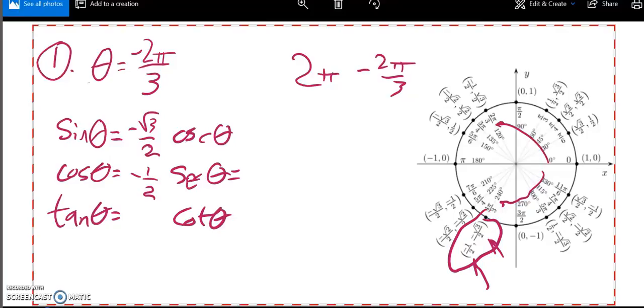So that means that secant would be negative 2 over 1. Cosecant would be negative 2 over root 3, which is negative 2 root 3 over 3.